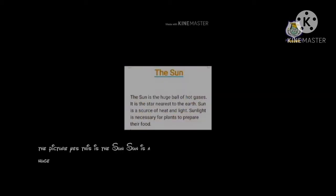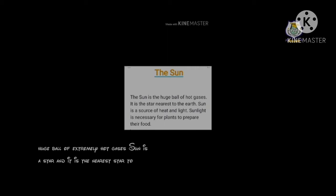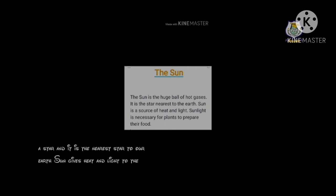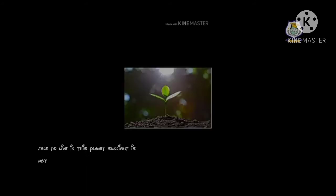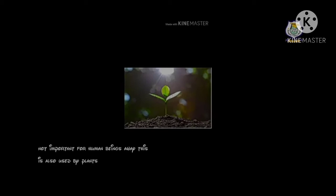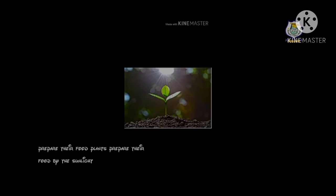This is the sun. The sun is a huge ball of extremely hot gases. The sun is a star and it is the nearest star to our earth. The sun gives heat and light to the earth, which makes life possible on earth. Sunlight is not only important for human beings — it is also used by plants on earth to prepare their food through sunlight.